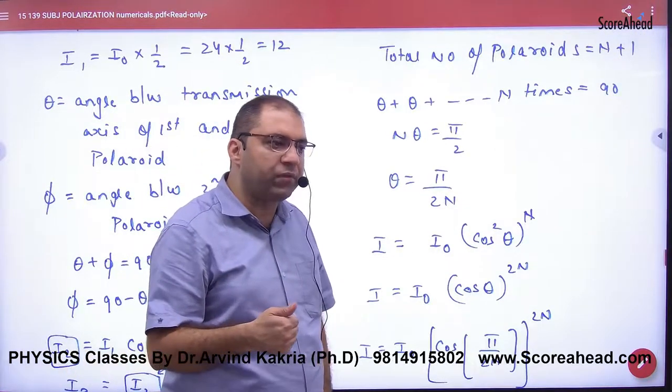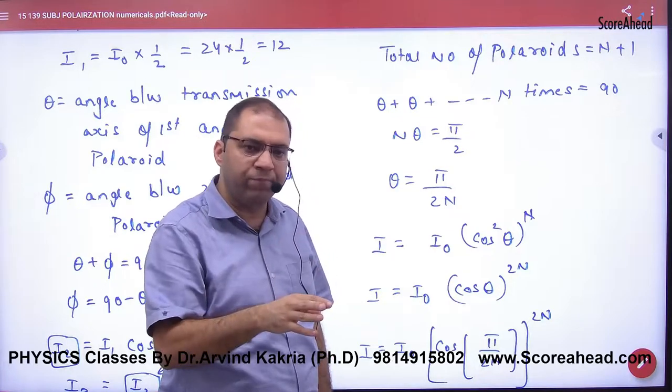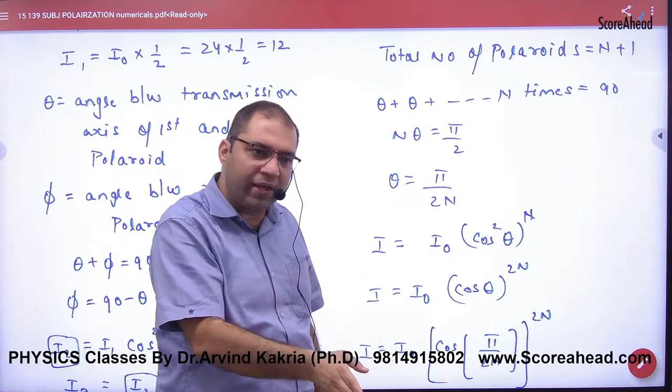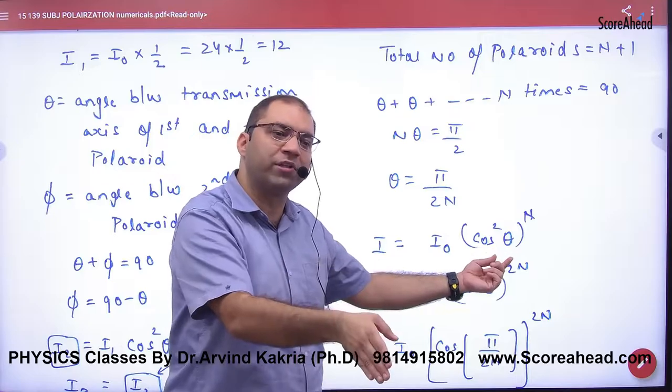Now, from the first Polaroid, the light is I₀. After the first Polaroid, it becomes I₀/2. As it enters the next Polaroid, Malus's law applies with cos θ. Then in the next one, another cos θ. In the next one, another cos θ.